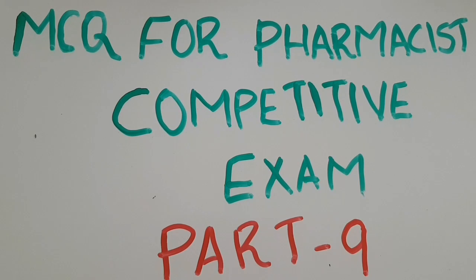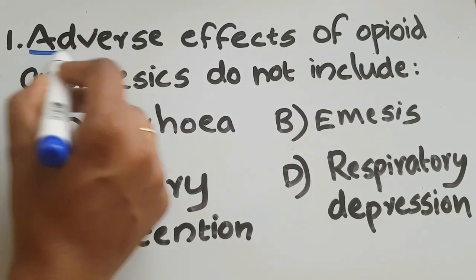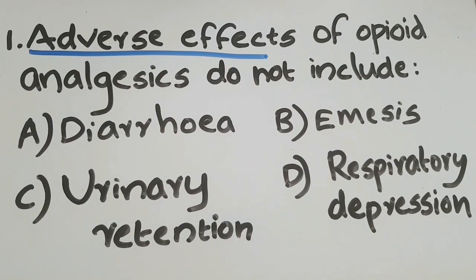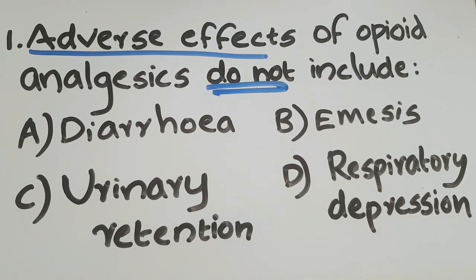Here we start our ninth part of the multiple choice question series. First question: adverse effects of opioid analgesics do NOT include — option A: diarrhea, option B: emesis, option C: urinary retention, and option D: respiratory depression.